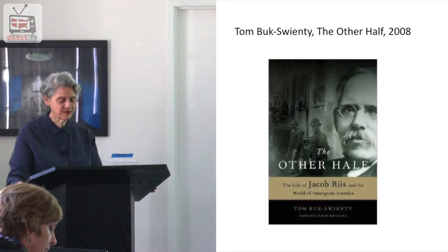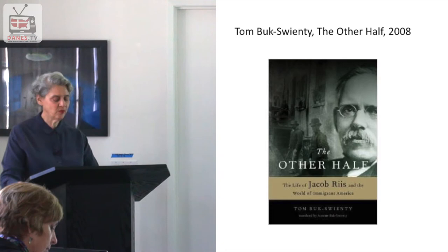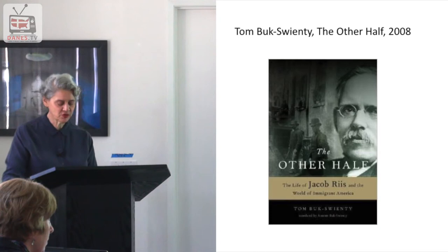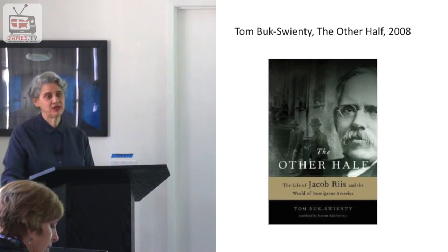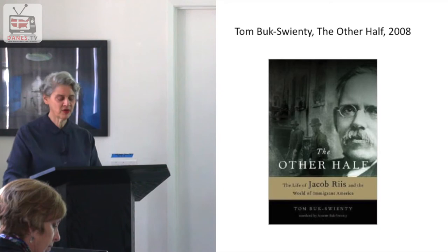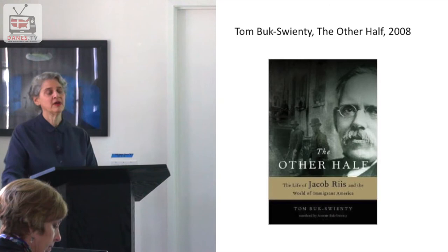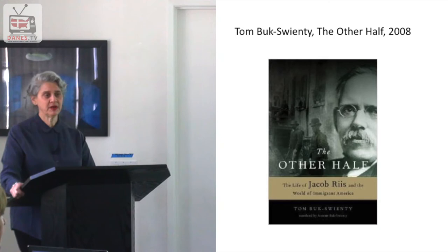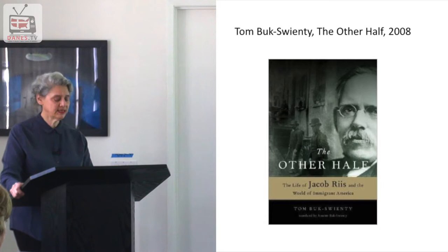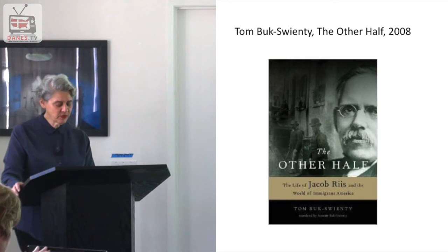In the 1880s Riis was a police reporter working at night with his office right next to police headquarters on Mulberry Street in lower Manhattan, which was at the time one of the worst slums of the city. This was a time of massive immigration from southern and eastern Europe — Italians from southern Italy, Jews primarily from eastern Europe, as well as Polish, Bohemian, and Czech groups. The city was booming economically but there was not enough housing and there was an endless labor supply, so this was a perfect storm for poverty.